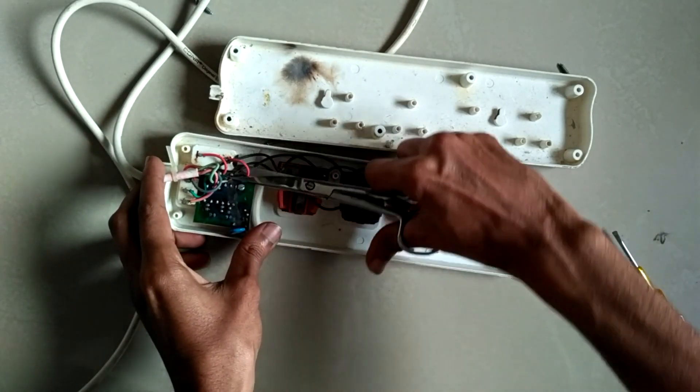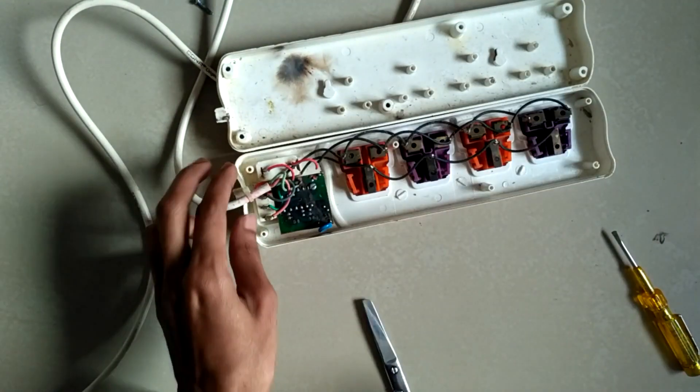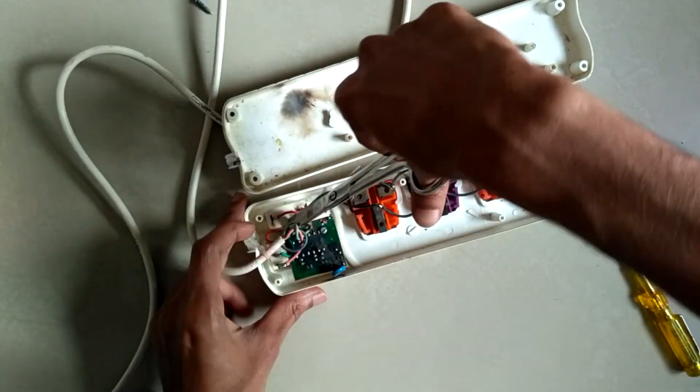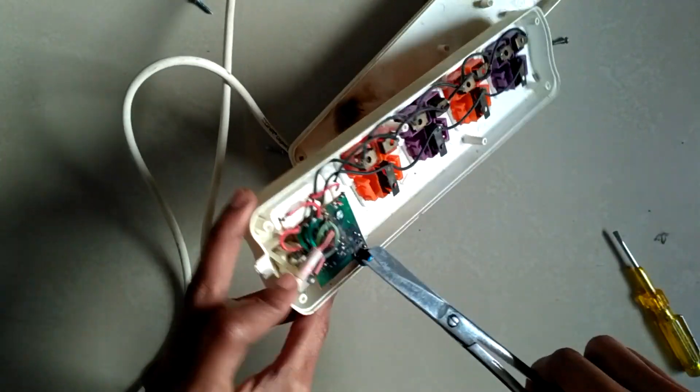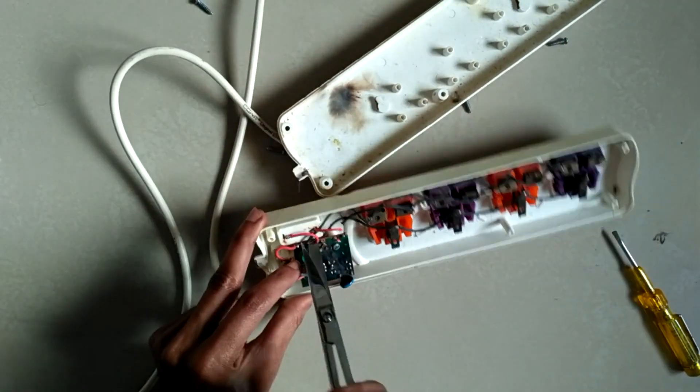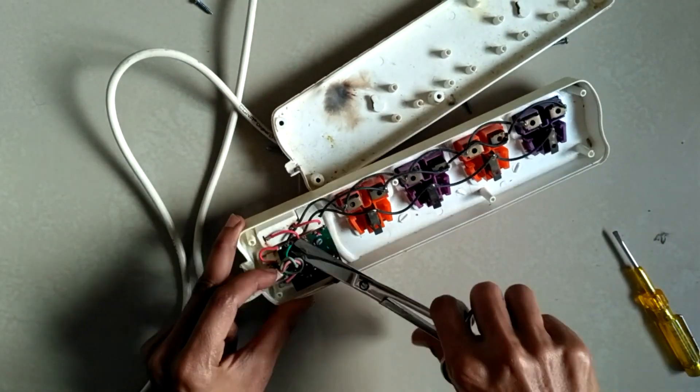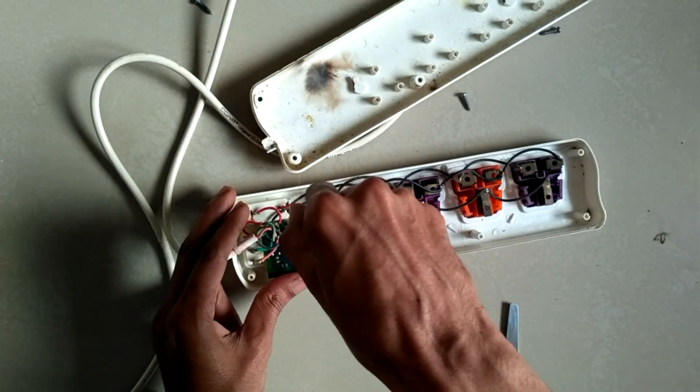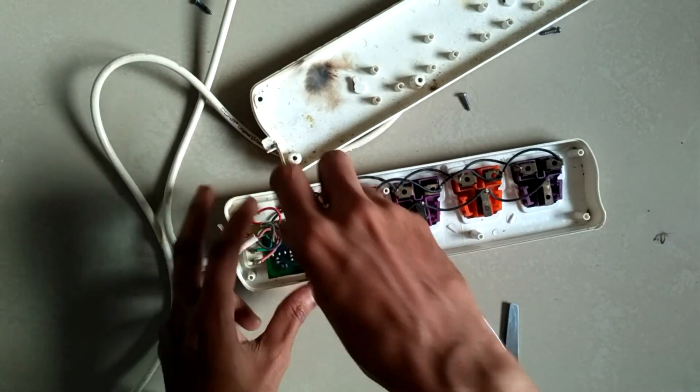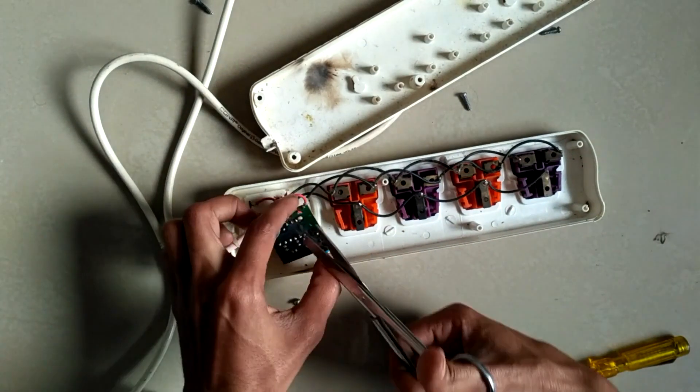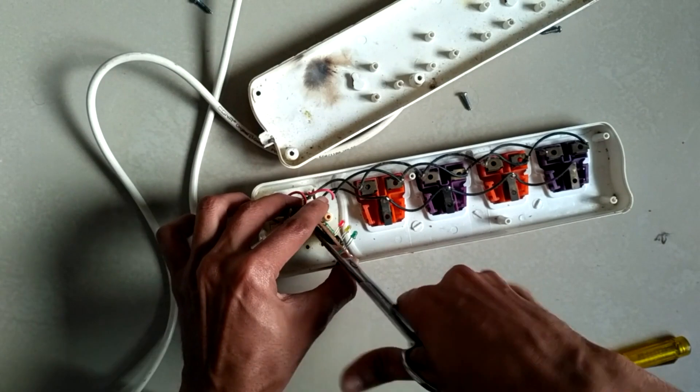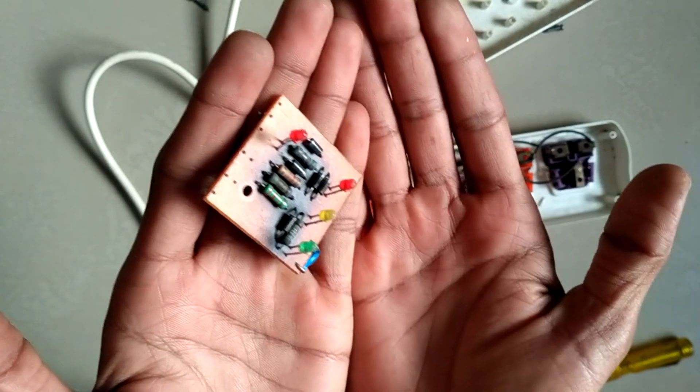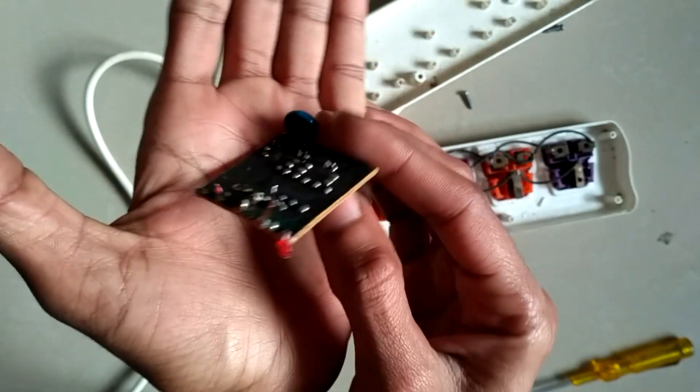Let's cut off these cables. I am going to take out this board and show you what happened to the resistors and capacitors. Here you can see the board is completely burned out. The IC is blasted.